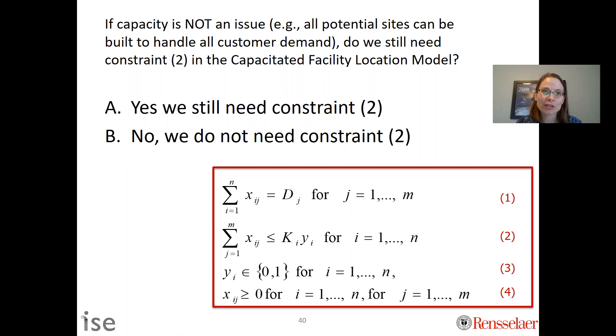My first question for you is: if capacity is not an issue, so we still need to decide where to open but in any of those locations capacity could handle all of the customer demand, do we still need constraint two in the capacitated facility location model?